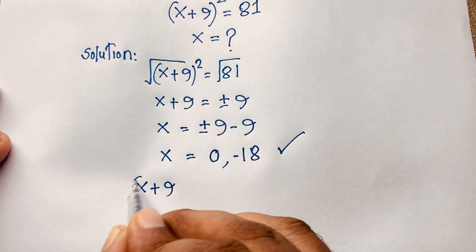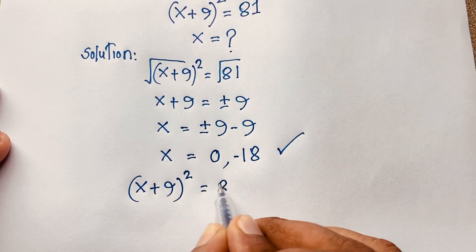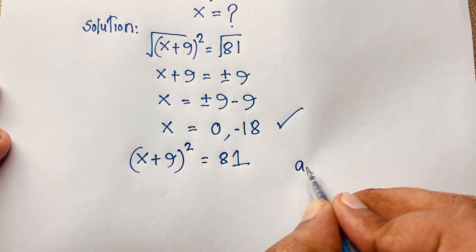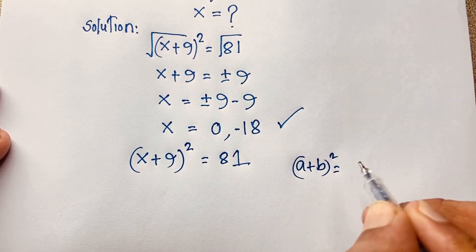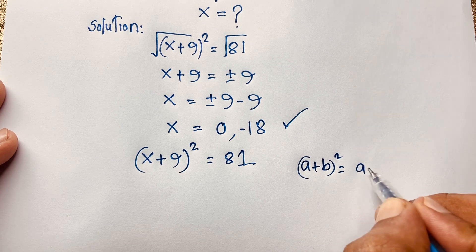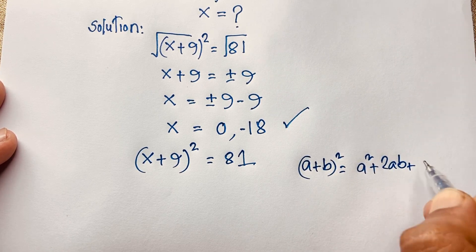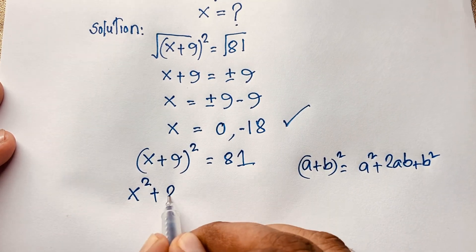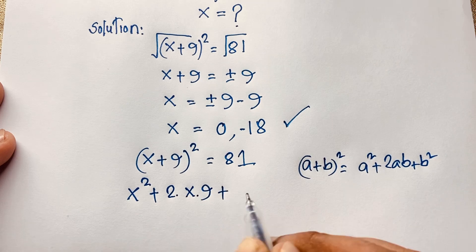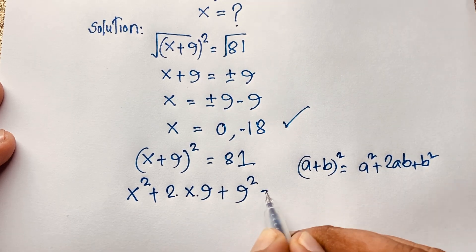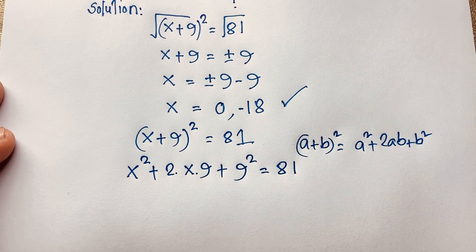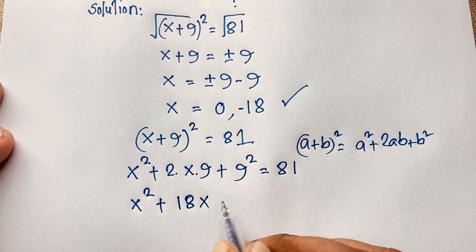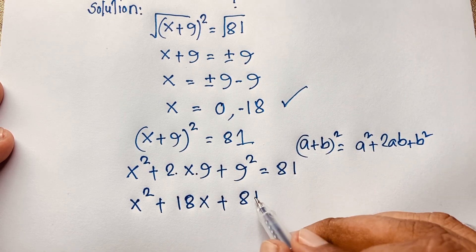Now I solve this question using another method. Our question is (x + 9)² = 81. We know that (a + b)² = a² + 2ab + b². Applying this, it will be x² + 2·x·9 + 9² = 81, which gives x² + 18x + 81 = 81.